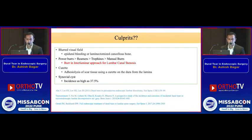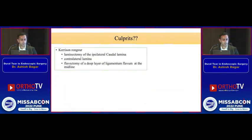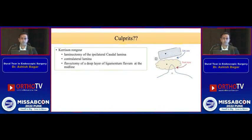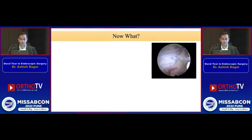Curets can also cause tears, as can synovial cysts. In some studies, the incidence can be as high as 37.5%. Kerrison rongeurs, mainly when doing laminectomy on the inferior lamina on the ipsilateral or contralateral side, or while doing flavectomy of the deep layer of the ligamentum flavum, particularly in the midline — because in the midline there is a spiking of dura just beneath the deep layer of the ligamentum flavum — which can be injured.